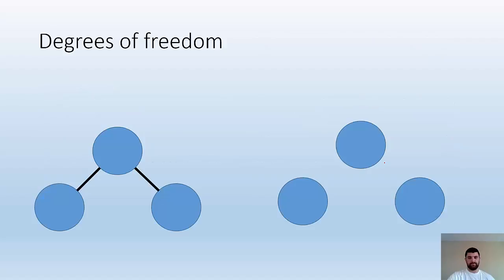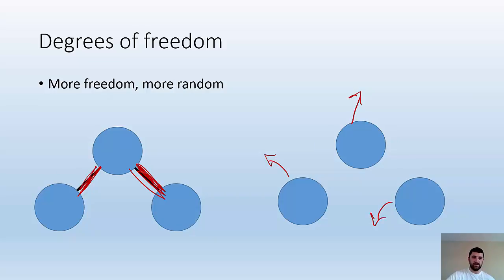All right, so degrees of freedom. Basically the more freedom the particles have, the more random it is. So if we take a look at this, this is a molecule where there are three atoms bonded together, and here they're not bonded so they're free to move about however they want, away from each other or with each other. Whereas if they're bonded together they have less freedom.